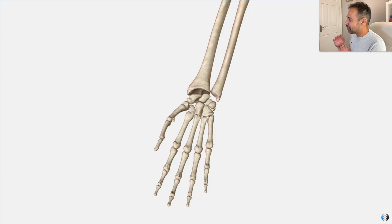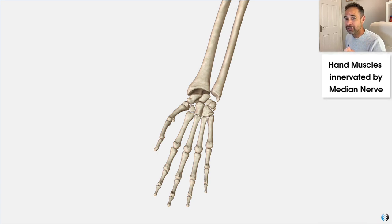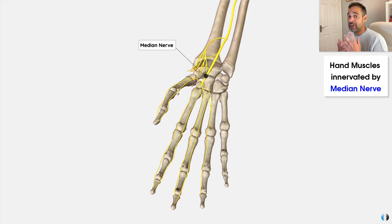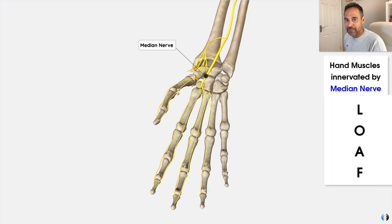The first memory aid we're going to give you is one that helps you remember the key muscles of the hand that are supplied by the median nerve. So if you have a patient who has carpal tunnel syndrome or a median nerve palsy, how do you know which muscles are affected? Just remember the LOAF muscles — L-O-A-F.